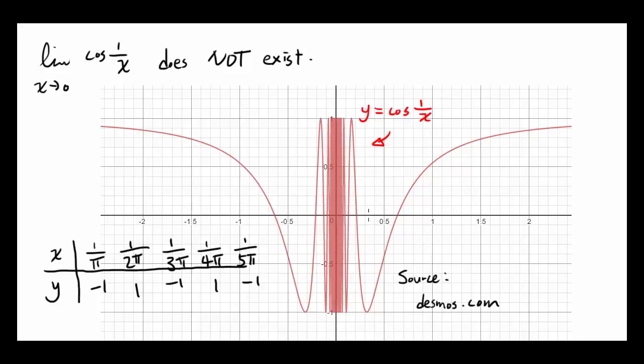And as you can see, as we are getting closer and closer to 0 from the right, and closer and closer to 0 from the left, the function is oscillating or going in between two values. The function is going in between 1 and negative 1 pretty rapidly.